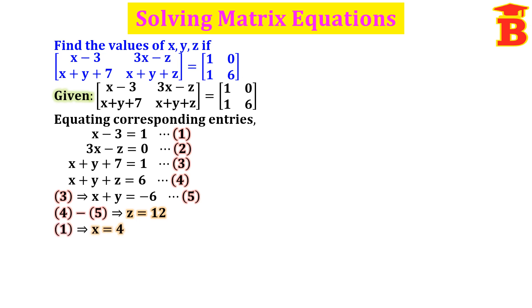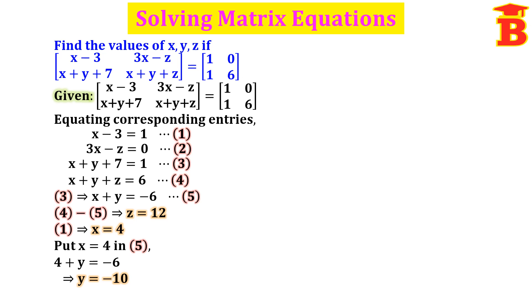From the first equation, x minus 3 equals 1, so x equals 1 plus 3, that is 4. Now put x equal to 4 in the fifth equation: 4 plus y equal to minus 6. Taking 4 to the right side gives y equal to minus 6 minus 4, that is minus 10.